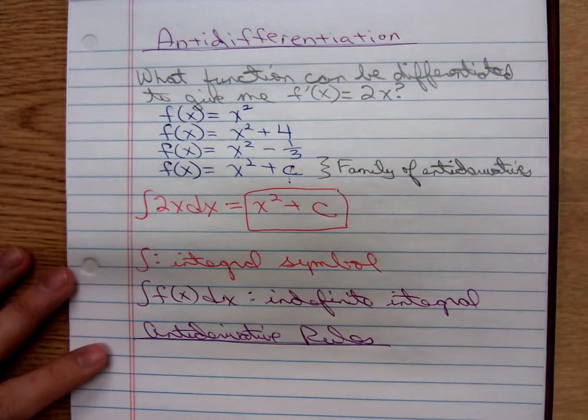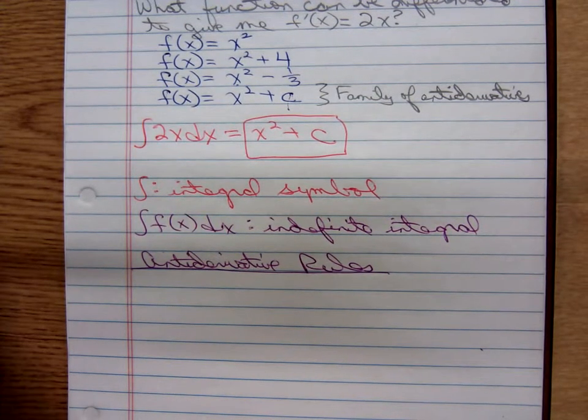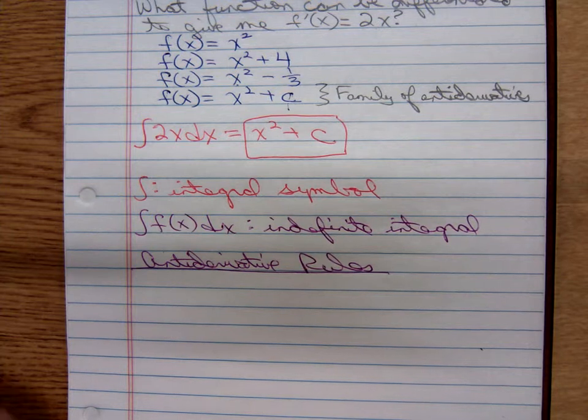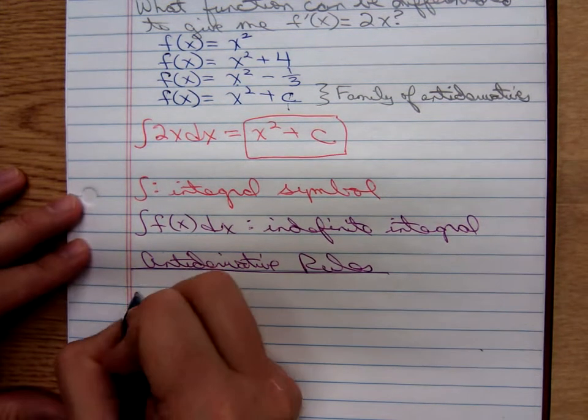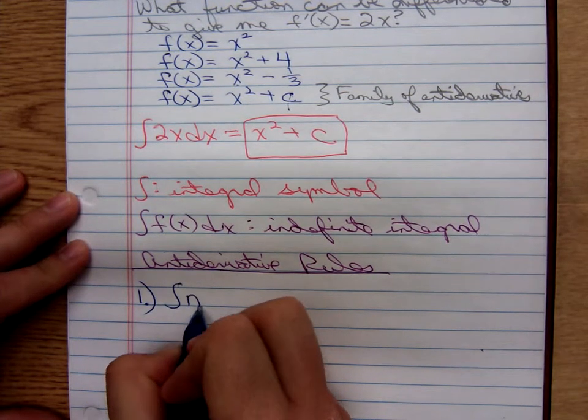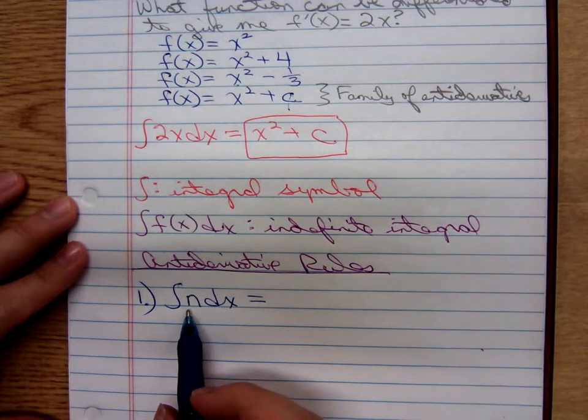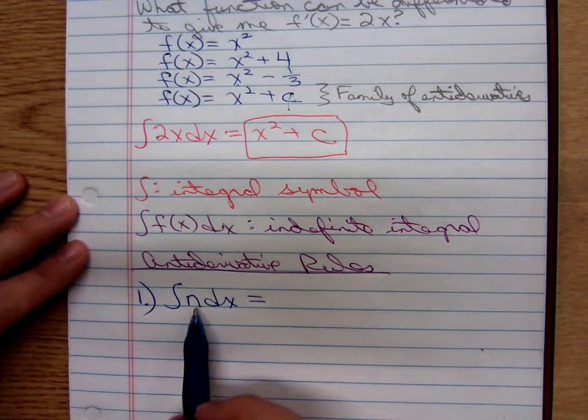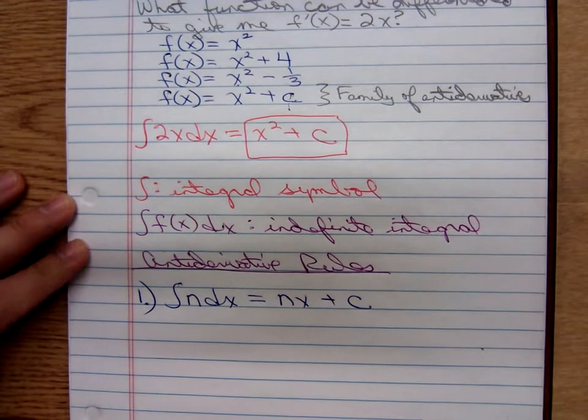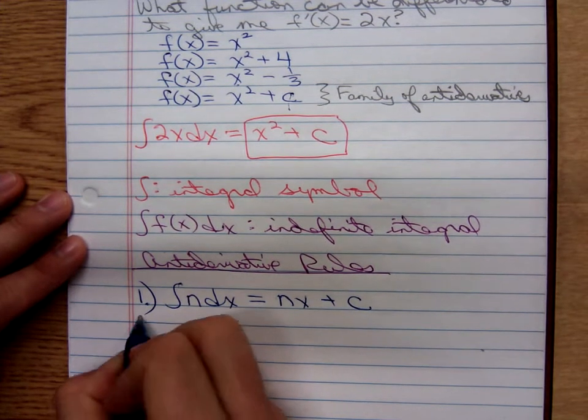And I have a couple of antiderivative rules that I want to state. Don't start groaning. We're not going to have as many antiderivative rules as we had derivative rules. Let's see the first one. The antiderivative of a number in terms of x. The antiderivative of just a number. What can you differentiate to give yourself just a number? Well, a number times x, plus the constant c.